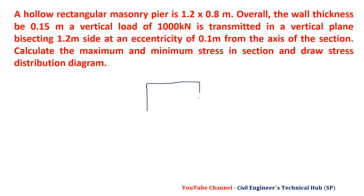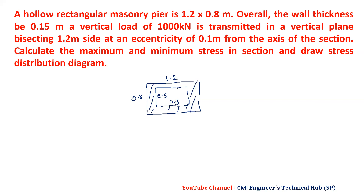The section is 1.2 by 0.8 with a wall thickness of 0.15 from all sides. So 0.15 subtracted on each side: 0.3 total, making the inner dimensions 0.9 by 0.5. This is a hollow column, and a vertical load of 1000 is transmitted in a vertical plane bisecting the section.